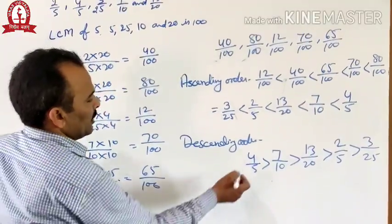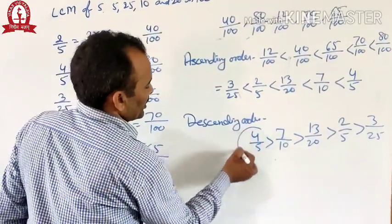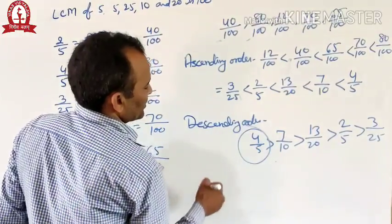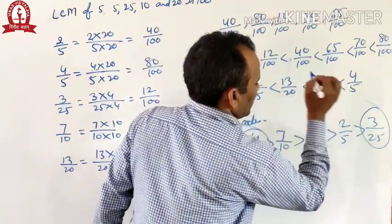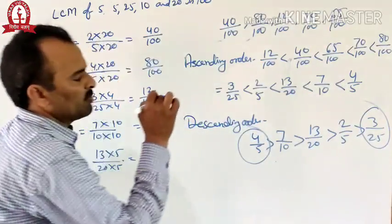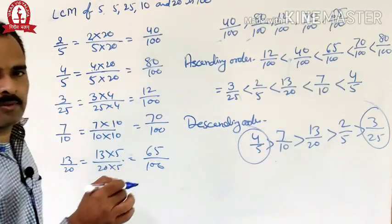Here 4 by 5 is the greatest fraction and 3 by 25 is the smallest fraction.